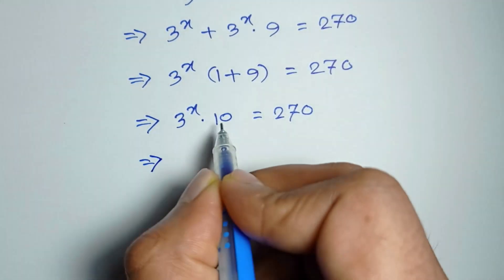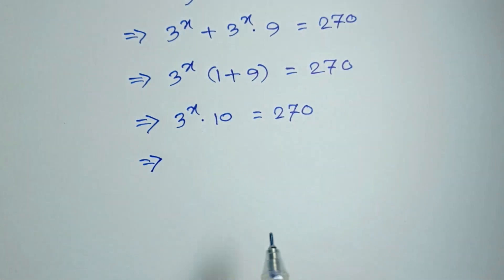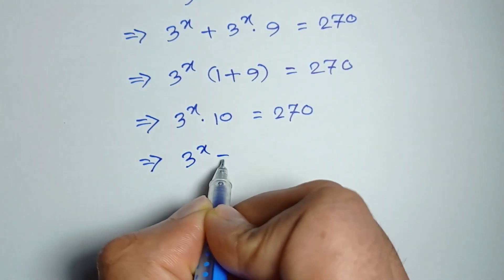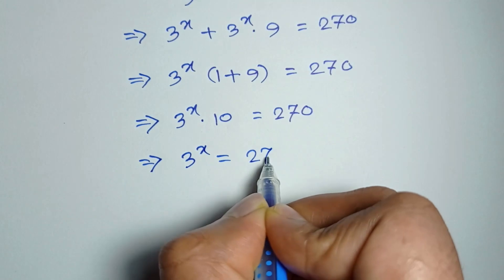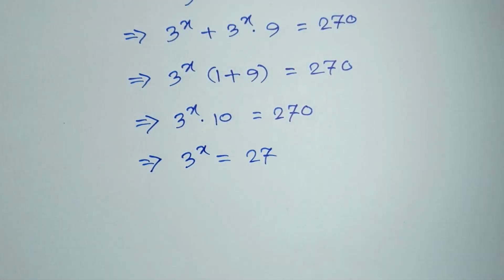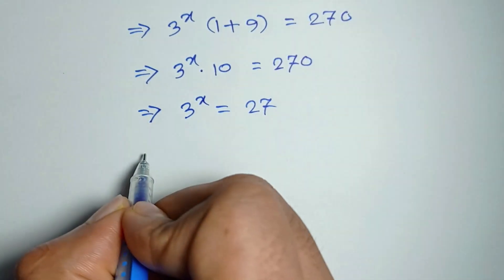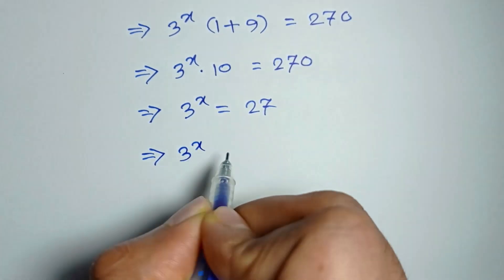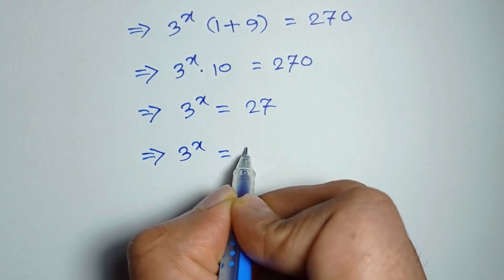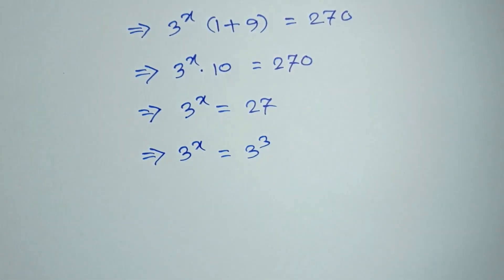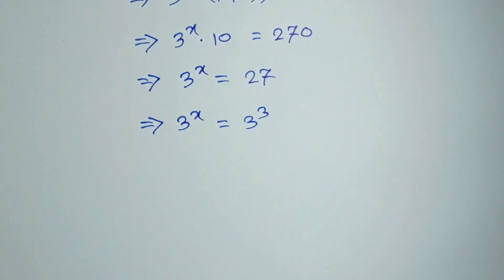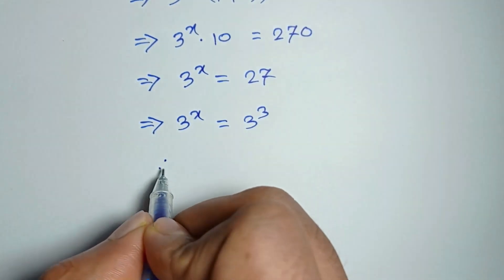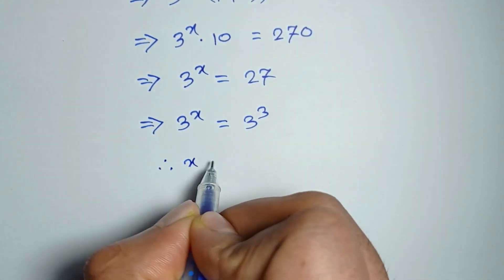If we divide both sides by 10 we get 3 to the power x is equal to 27. Or 3 to the power x is equal to 3 to the power 3. Here same base, so x is equal to 3.